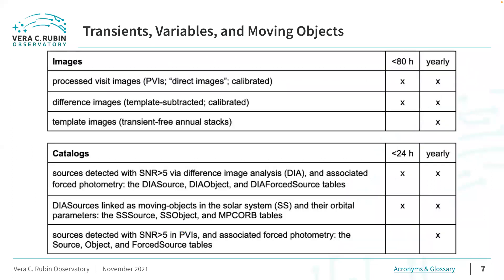The image types most relevant to LSST time domain science will include the processed visit images, or PVIs, which are also referred to as direct images; the difference images, which are the result of subtracting a template image from a PVI; and the template images, which are transient-free, annual deep stacks. The catalogs most relevant to the study of transient objects will be those that result from the detection, measurement, and association of sources via difference image analysis, all of which will be prefixed with the acronym DIA.